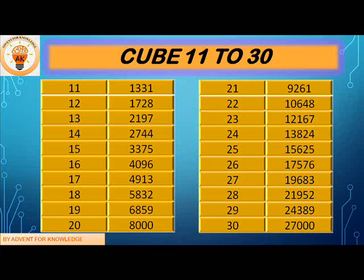15 cube is 3375, 16 cube is 4096, 17 cube is 4913, 18 cube is 5832, 19 cube is 6859, 20 cube is 8000. Let's repeat the sequence again so that you'll be able to remember.